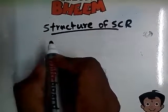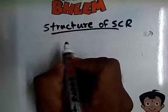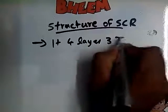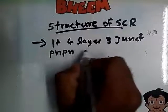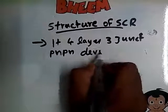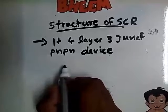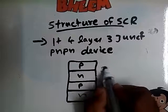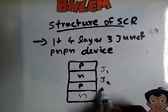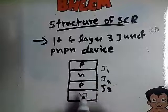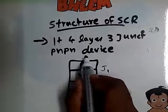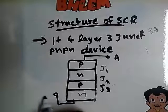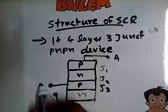Now we consider the structure of the SCR. SCR is nothing but a Thyristor. It is a 4-layer, 3-junction PNPN device. The structure has four layers: P, N, P, N, and three junctions — junction 1, junction 2, and junction 3. It has three terminals: the outer P layer is the anode, the outer N layer is the cathode, and the inner P layer is the gate terminal.